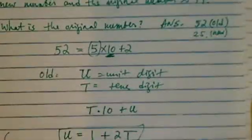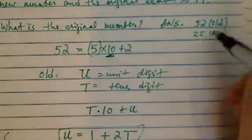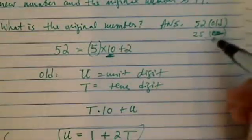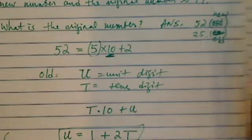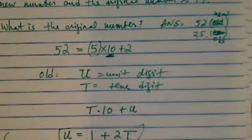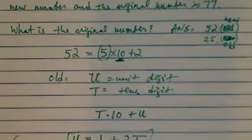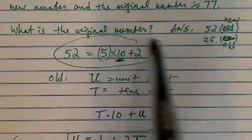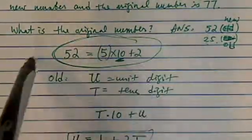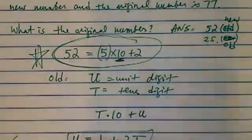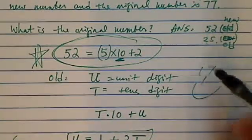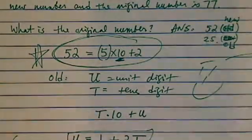Let me go back and correct this — 25 is actually the old number, and 52 is actually the new number. The trick is really in how to write the numbers. Hope this helps. Have a confident day.